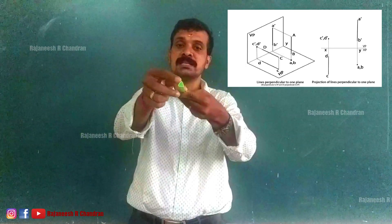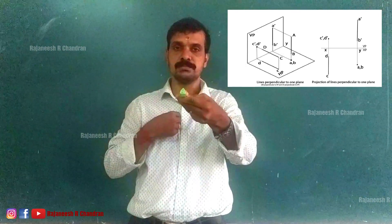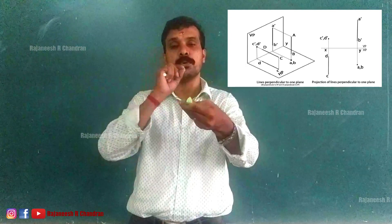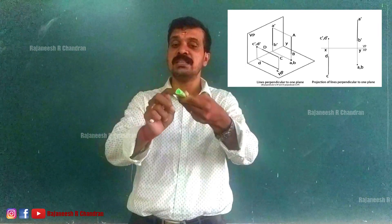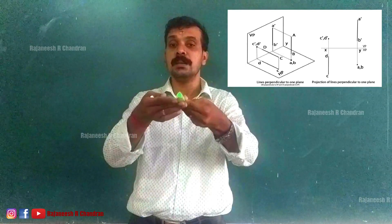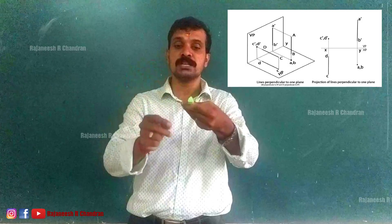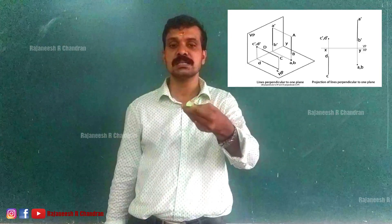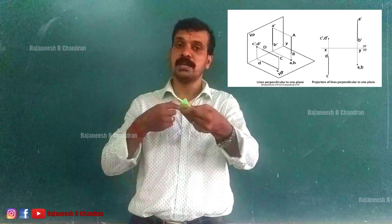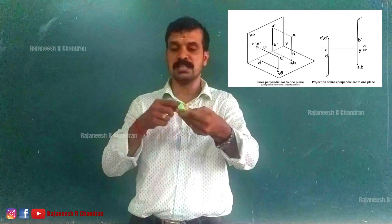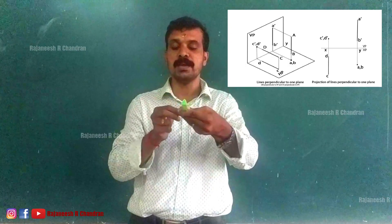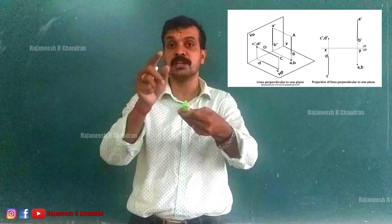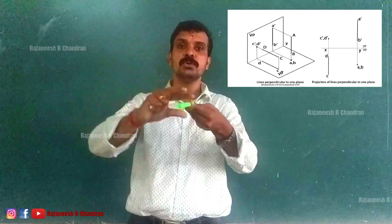When the line is perpendicular to VP, you can see both end points as a single point in the front view. So when a line is perpendicular to one of the reference planes, its projection on that plane becomes a point. Since this line is perpendicular to VP it is parallel to HP, and when a line is parallel to a reference plane its projection on that plane shows the true length. So in the front view you see a single point (A′B′), and in the top view you see the true length.